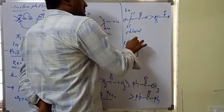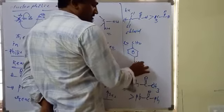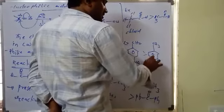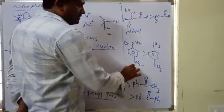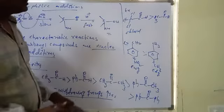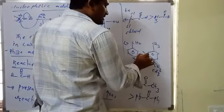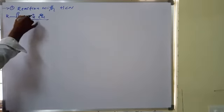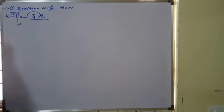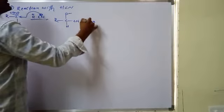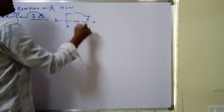Another example: if we take benzaldehyde and write nitrobenzaldehyde, the nitro group is an electron-withdrawing group, which increases reactivity. The CN minus nucleophile will first attack, then H plus will attack in the next step.